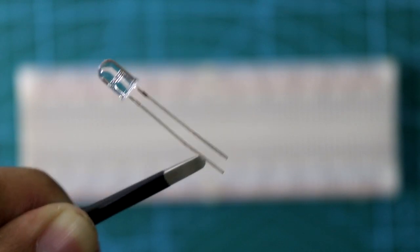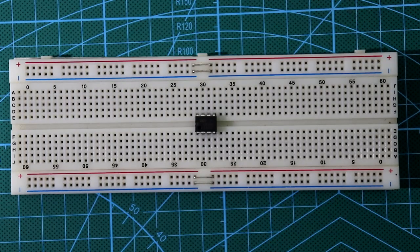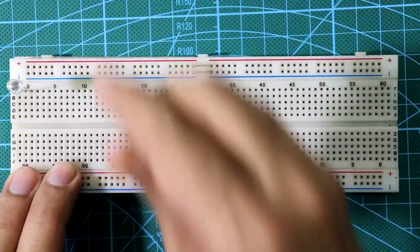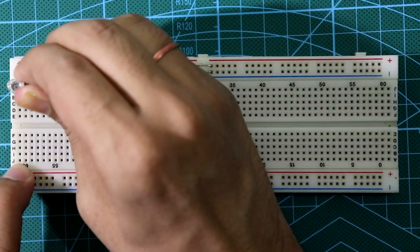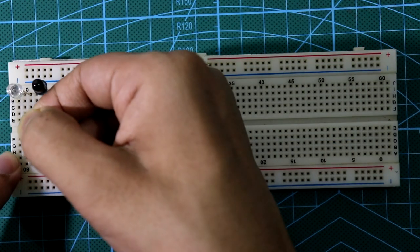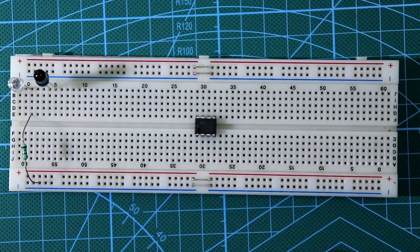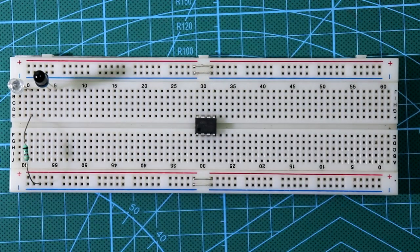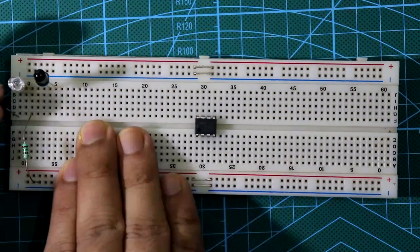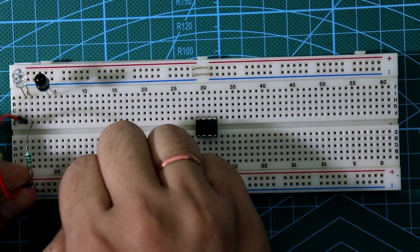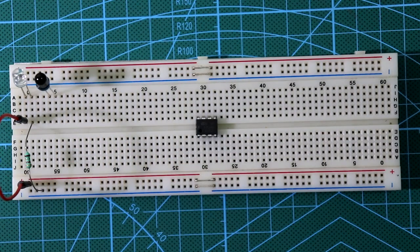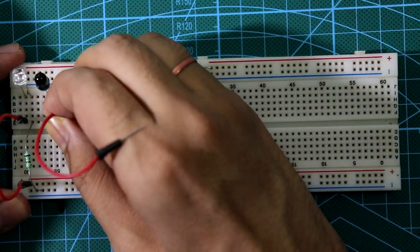And the longer pin is anode, shorter is cathode. First put the IC here, put IR LED here, put photodiode. Cathode of the IR LED is connected to ground through a 150 ohm resistor. You can use 100 ohm resistor also. Anode of the LED is connected to the plus VCC.